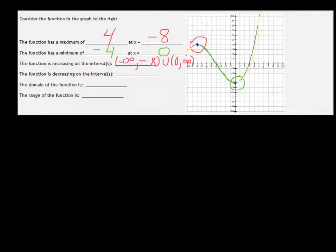The function is decreasing in the interval that we haven't described for increasing. So in other words in between, which is negative 8 to 0. And you never want to use brackets on increasing and decreasing.